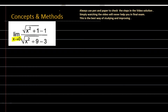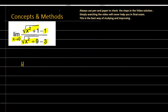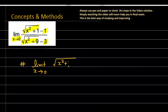The question is: limit x approaching 0 of square root of (x squared plus 1) minus 1, divided by square root of (x squared plus 9) minus 3. So let's see how we are going to solve this problem. I will first note down the question: limit x approaching 0, numerator is square root of (x² + 1) minus 1, denominator is square root of (x² + 9) minus 3.